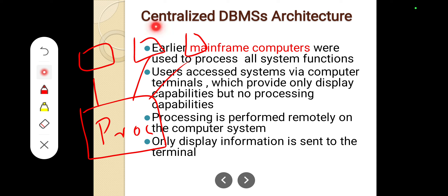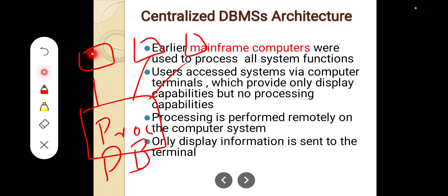In a centralized DBMS architecture, the centralized system will have the DBMS and the database. Any database access request from a client will come to this centralized DBMS, get the information, and display it to the terminal.